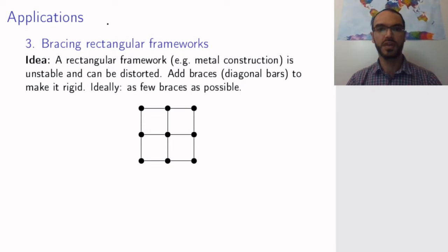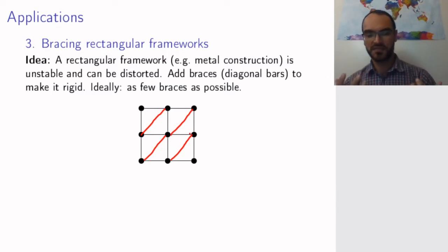So what I do is I add diagonal bars, and now my graph or metal construction is rigid. Well, okay, so what's more to say about this? I added four bars. Ideally I want to add as few as possible. You can probably convince yourself that the last one was unnecessary and that this metal construction is already rigid.